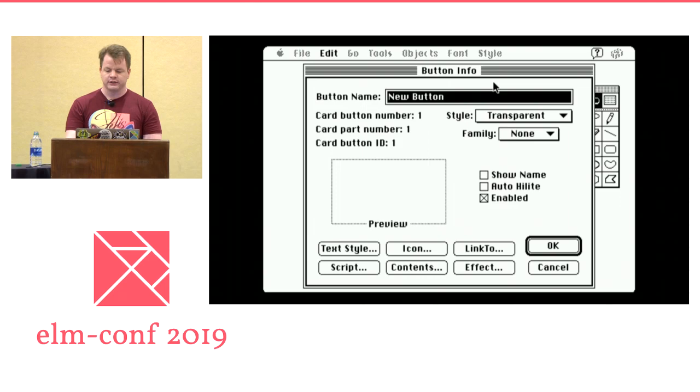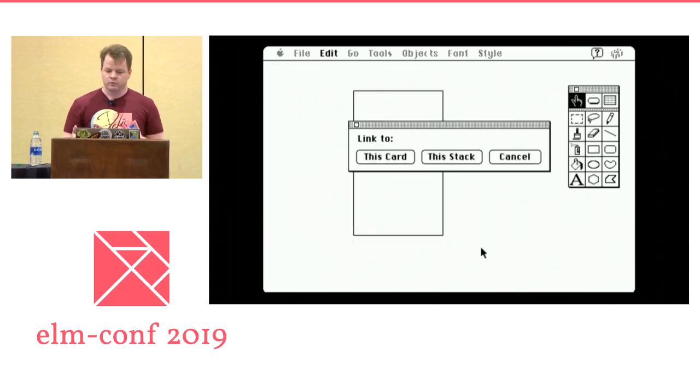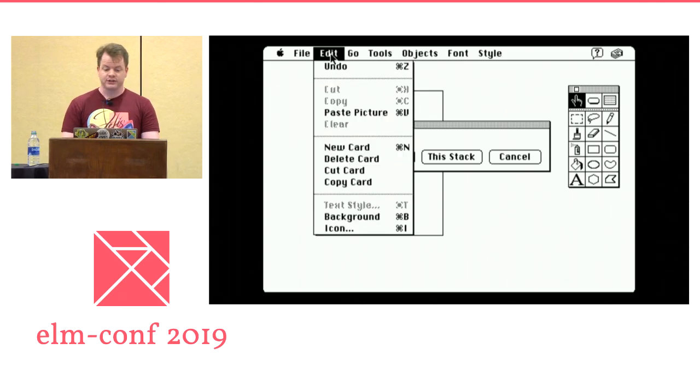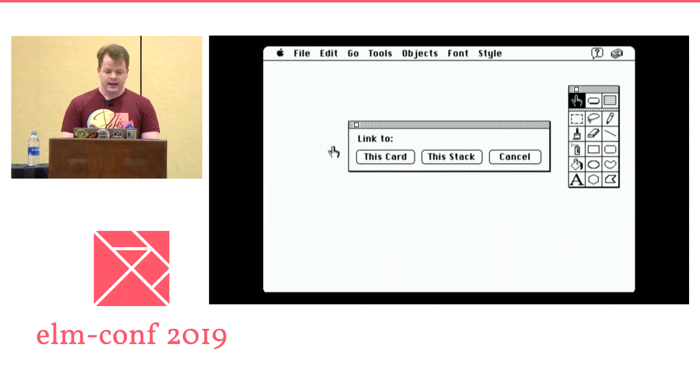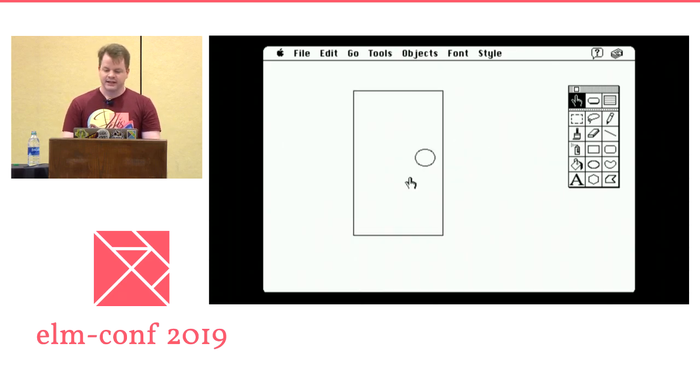And now I want it to link to a different card. So I click link to. And it asks me, which card do you want to link it to? And I haven't made this card yet. So I go to new card. And I say yes, this card, the card that I'm on, link here. And so now when I click on this button, I go to this new card.